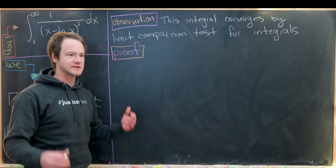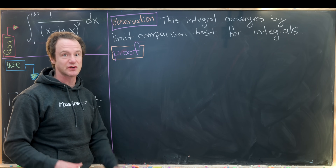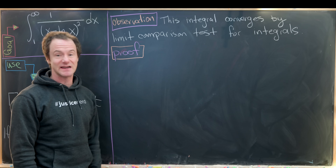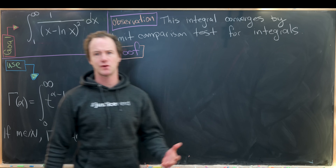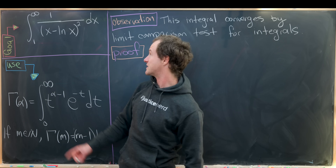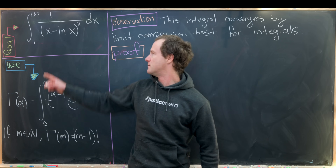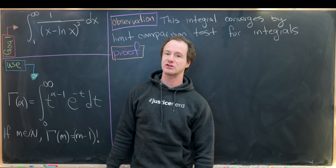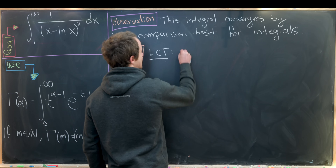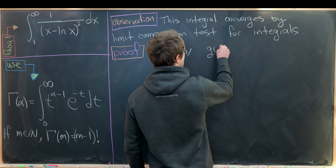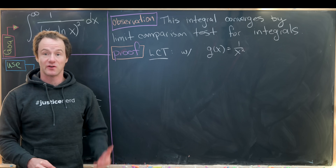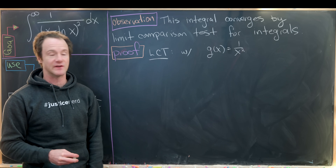The limit comparison test for series convergence is used quite a lot, but it's generally skipped in a Calculus 2 class for integrals, so this is a nice opportunity to use it. The dominant term is 1 over x squared because the x term is much larger than the natural log of x term. We're going to use the limit comparison test with g(x) = 1/x², which converges by the p-series test for infinite integrals.